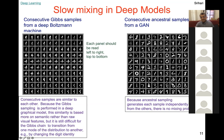A GAN — generative adversarial network — is another model for learning a probability distribution. There we can define a directed graphical model and use ancestral sampling. Because ancestral sampling generates each sample independently from others, there is no mixing problem — we get a nice variety: six, three, one, three, seven. Nice samples from all over, rather than slowly moving around.